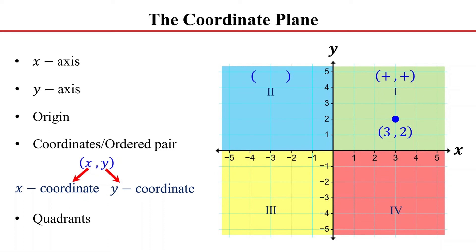In quadrant 2, the x-coordinate is negative and the y-coordinate is positive. For example, the point negative 3 comma 2 is in this quadrant.